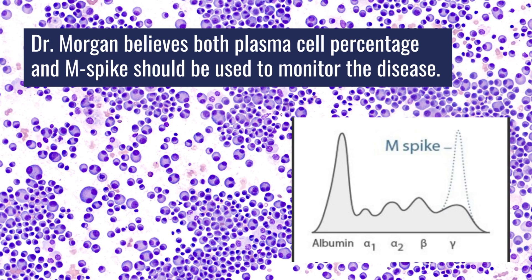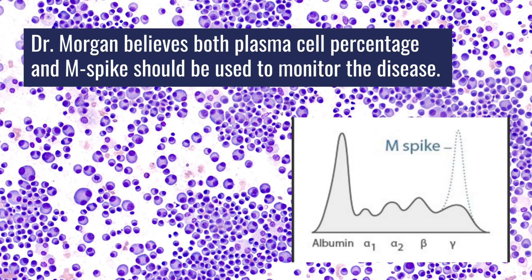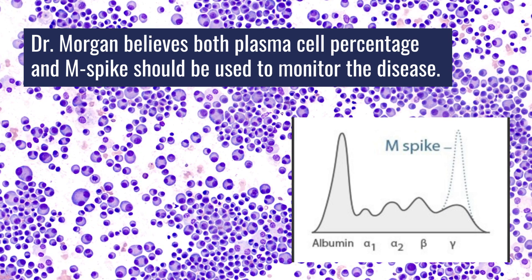I would argue strongly that you should use the plasma cells as well as the M-spike to monitor the disease. My practice would be to do imaging and the bone marrow annually to check how people are doing. If you have no abnormalities on the imaging and nothing positive with your MRD testing, you're looking very good for the next year, and you can relax and forget about your myeloma to a certain extent.